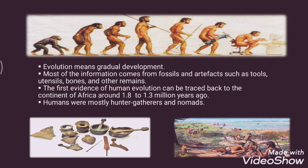Most of the information about this field comes from fossils and artifacts such as tools, utensils, bones, and other remains. The first evidence of human evolution can be traced back to the continent of Africa, around 1.8 to 1.3 million years ago. The fossils of these early humans come entirely from Africa, and they traveled in all directions in search of food, water, and new places to settle.